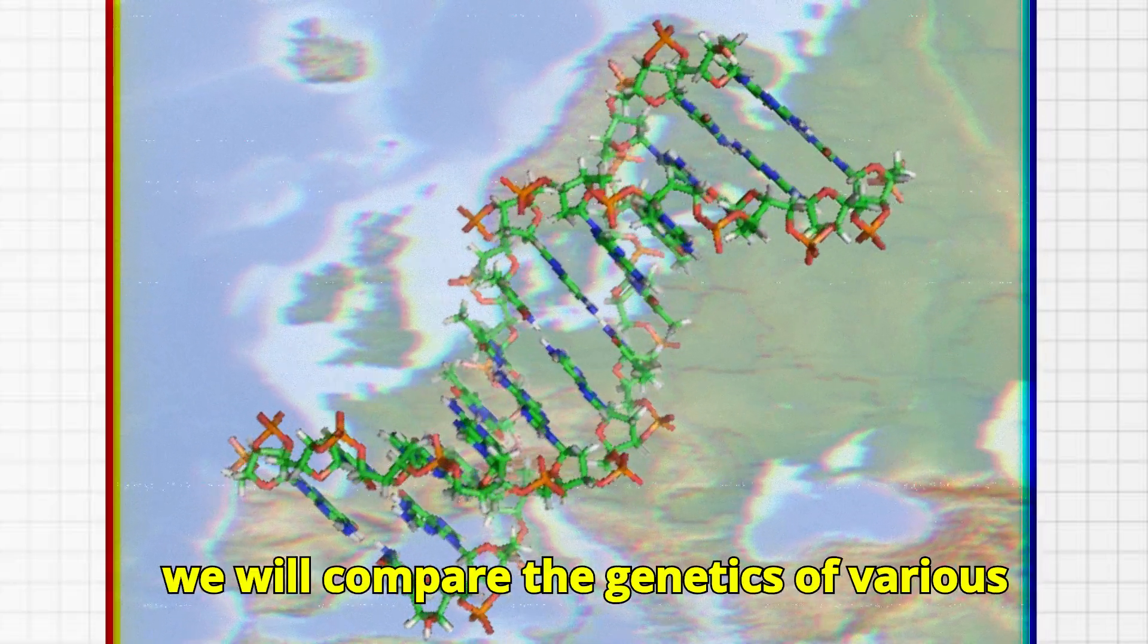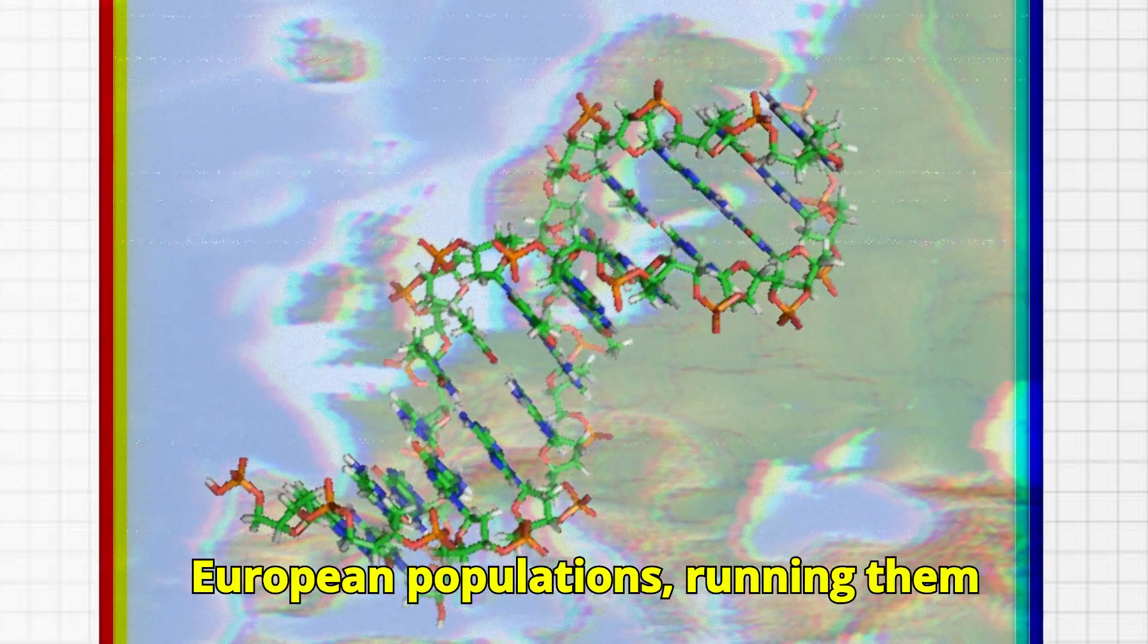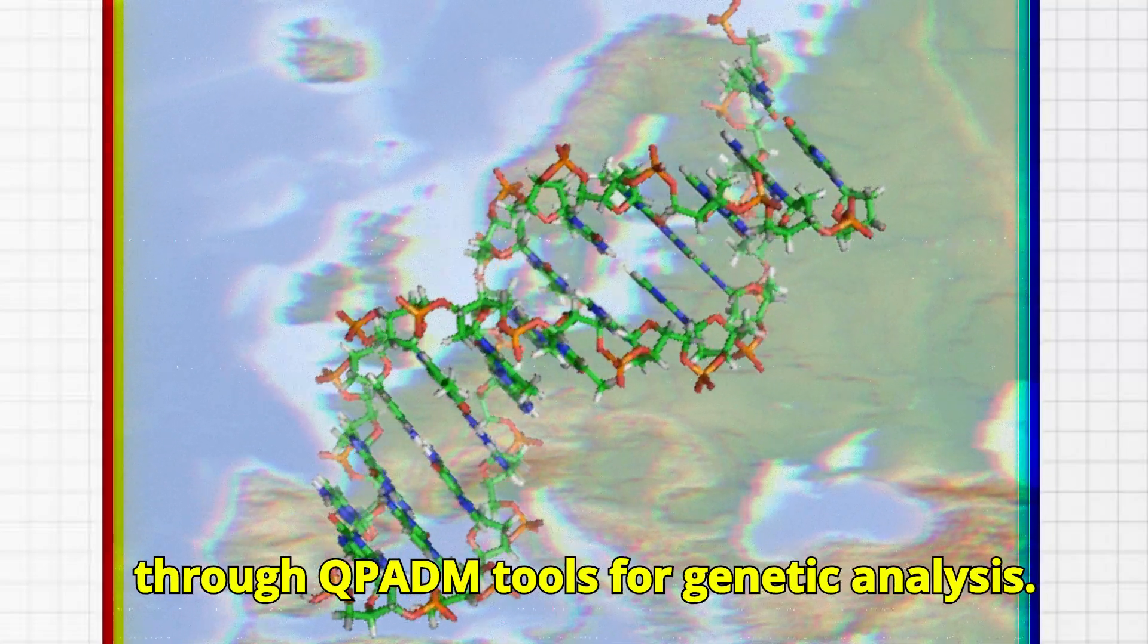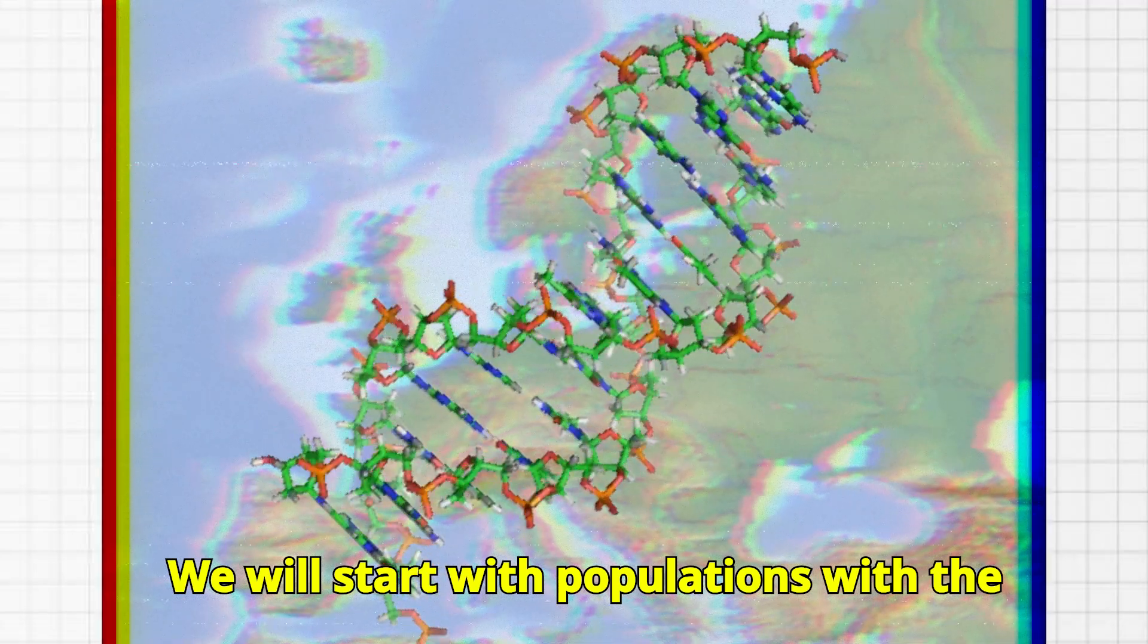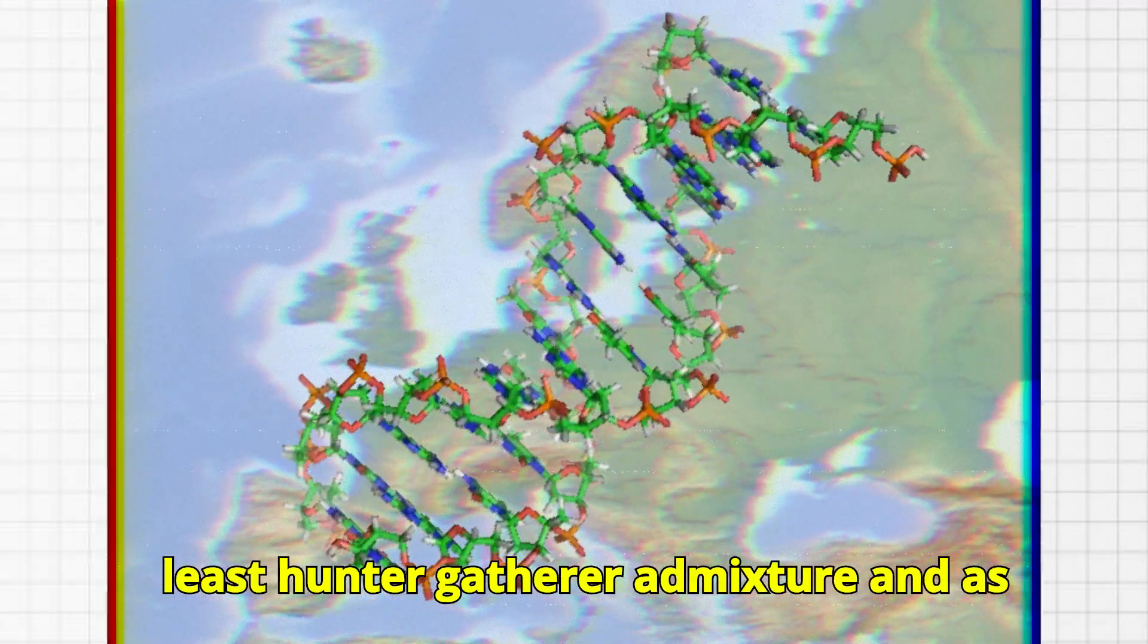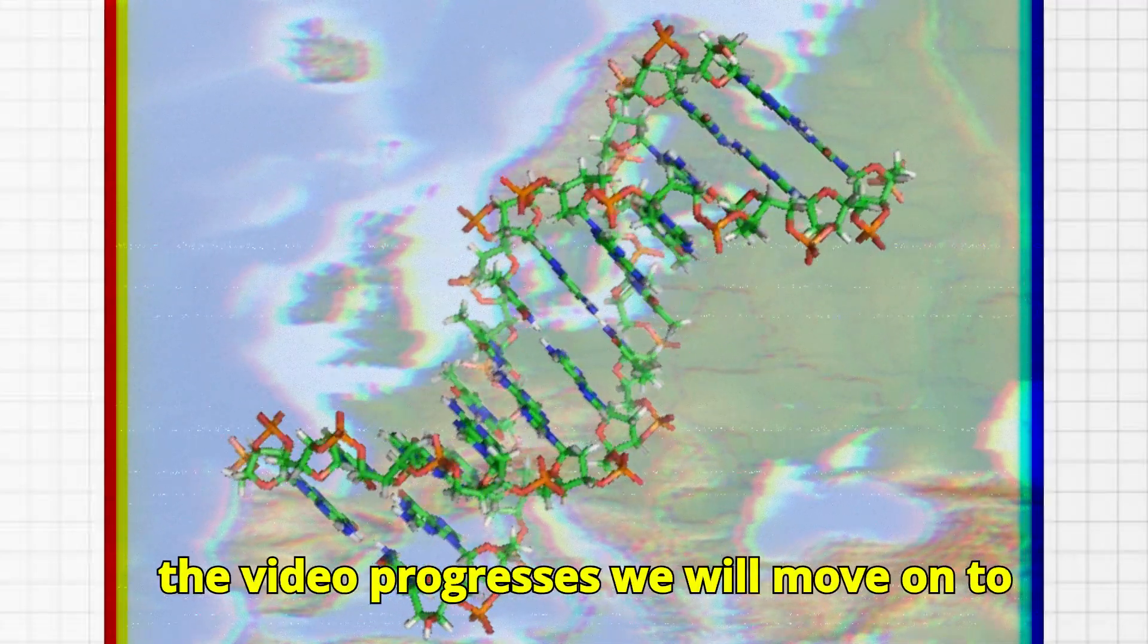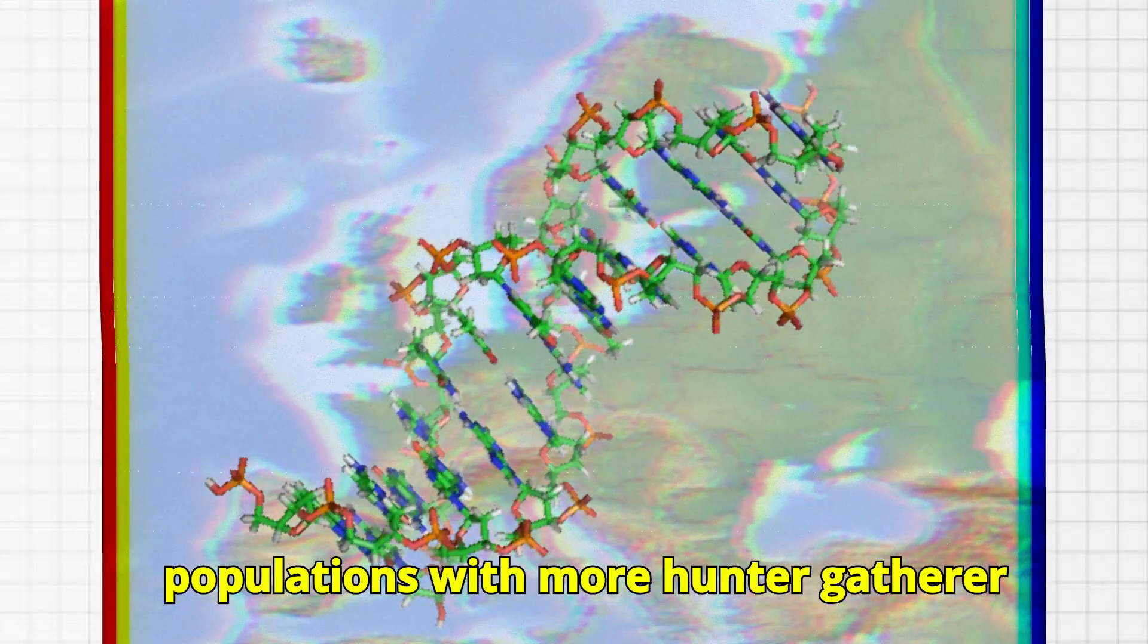In this video, we will compare the genetics of various European populations, running them through QP admixture tools for genetic analysis. We will start with populations with the least hunter-gatherer admixture, and as the video progresses, we will move on to populations with more hunter-gatherer admixture.